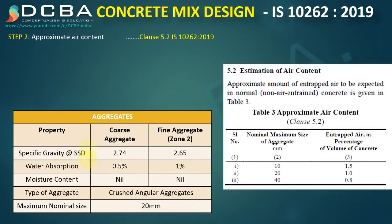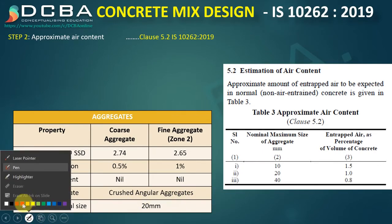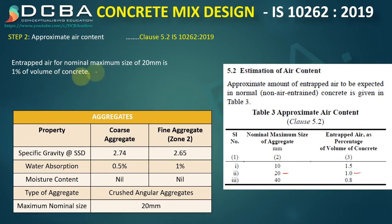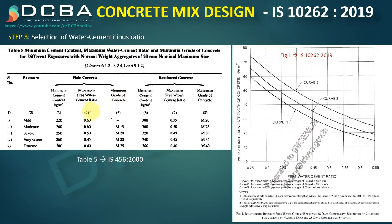Step 2 is approximate air content. It depends on the maximum nominal size of aggregates. Since our nominal size is 20 mm, the approximate air content is 1% of the total volume of concrete.